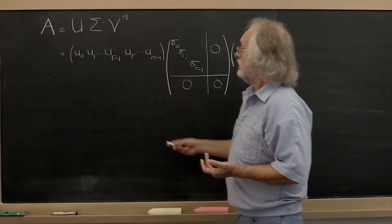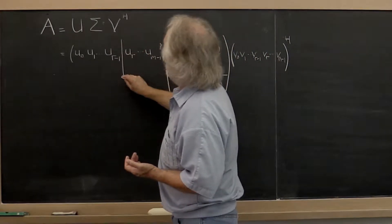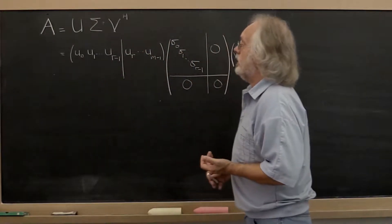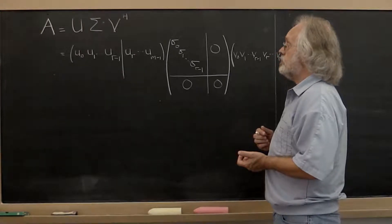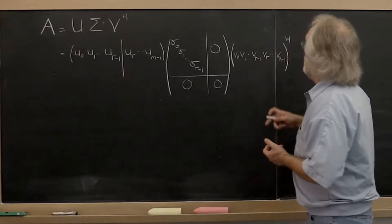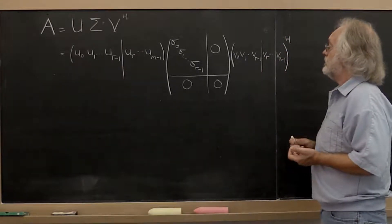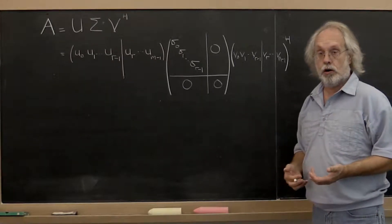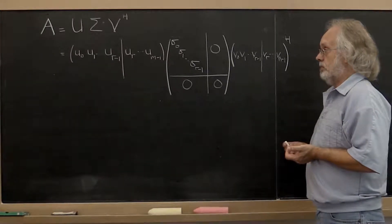And then correspondingly we could partition our matrix U into the first r columns and then the rest of them. And we can partition our matrix V into the first r columns and then the rest of them.